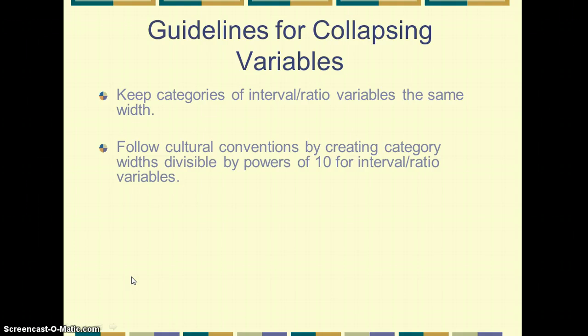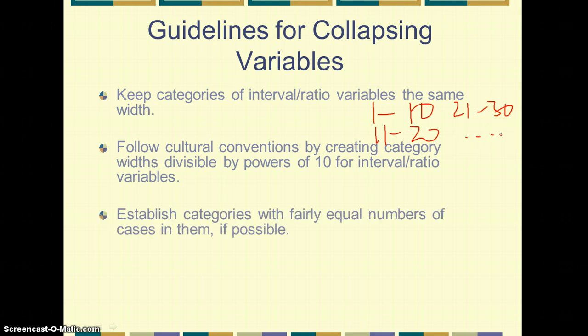We want to follow cultural conventions by creating category widths divisible by powers of ten generally. So I just gave divisible by powers of five. Let's do it by ten: one to ten, eleven to twenty, twenty-one to thirty, and you see how that goes. We want to establish categories with fairly equal numbers of cases in them if possible. Again, this is if you already have the data and you know that the data might be bunched up on the low end of scores or whatever the scale is. So you'd want to make sure that you were dividing it into categories that would not leave some categories empty.